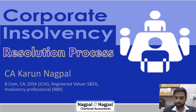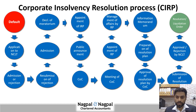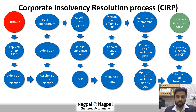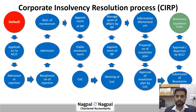Let us start with the Corporate Insolvency Resolution Process. What triggers the CIRP? It is a default. Once the default is there, an application can be filed to NCLT. NCLT may accept or reject the application. Once admitted, a moratorium will be declared and an IRP will be appointed. The IRP will make the public announcement, and the Committee of Creditors (CoC) will be constituted. Meetings of CoC will happen, and the IRP will get confirmed as the RP.